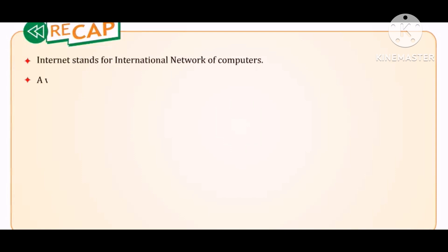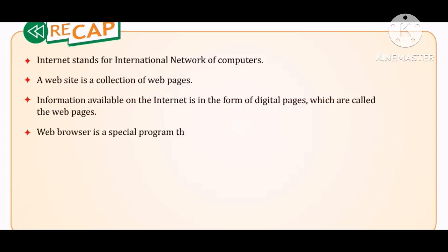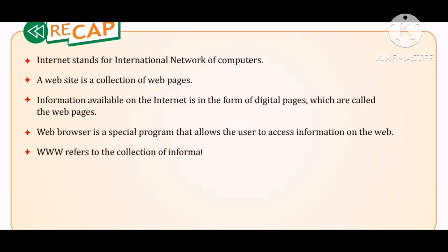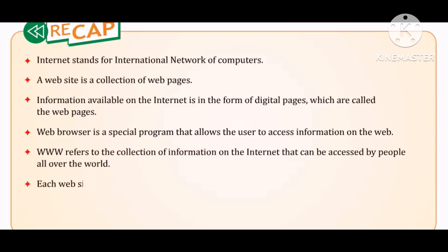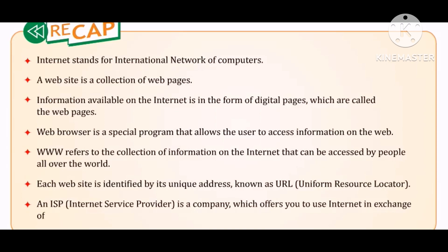Okay students, let us take a recap of this chapter. Internet stands for International Network of Computers. A website is a collection of web pages. Information available on the internet is in the form of digital pages called web pages. A web browser is a special program that allows the user to access information on the web. WWW refers to the collection of information on the internet that can be accessed by people all over the world. Each website is identified by its unique address known as URL, Uniform Resource Locator. An ISP, or Internet Service Provider, is a company which offers you to use the internet in exchange for a monthly fee.